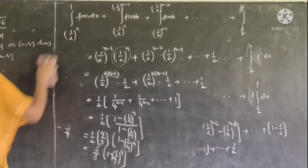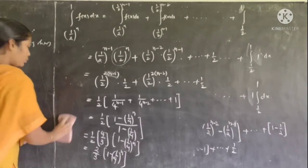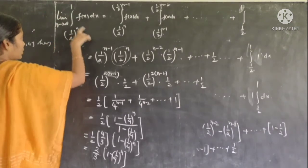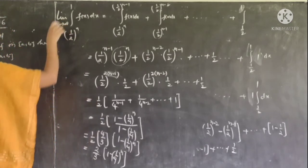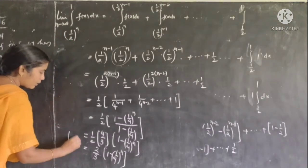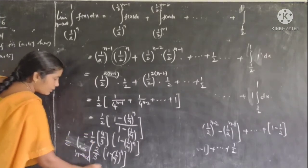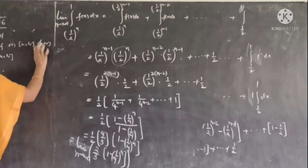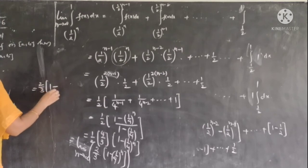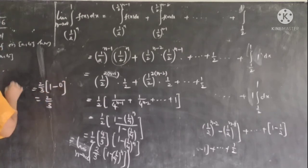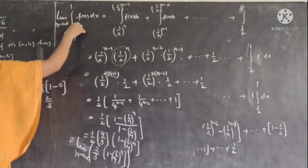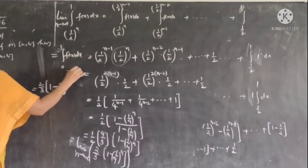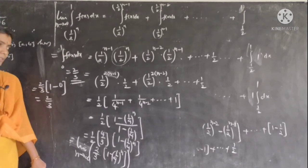The integral from 1/2^n to 1 of f(x)dx equals 2/3 times (1 - (1/4)^n). Taking the limit as n tends to infinity, (1/4)^n tends to 0, so the limit is 2/3 times 1 = 2/3. Therefore, the integral from 0 to 1 of f(x)dx = 2/3. This completes the example showing the function is integrable with integral value 2/3. Thank you.